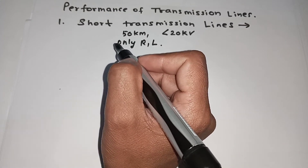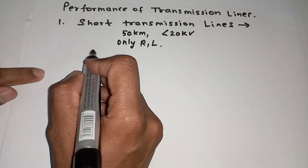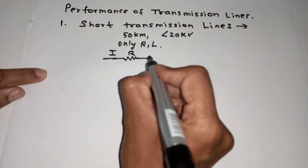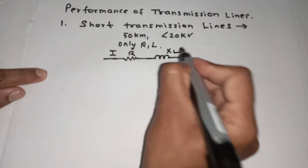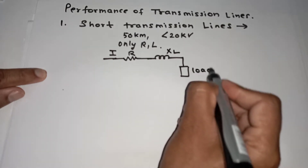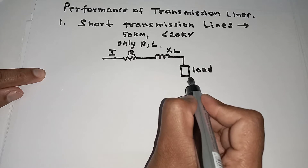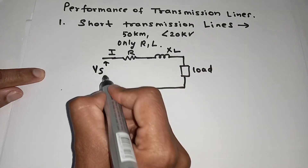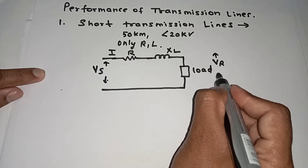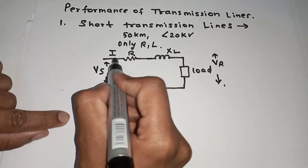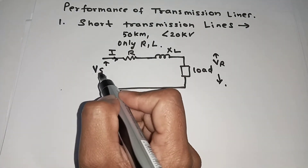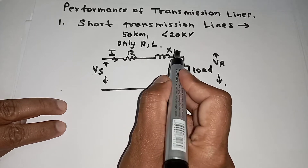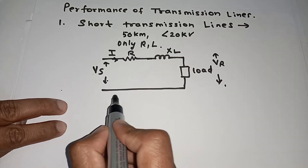Now we'll make a diagram of the short transmission line. We know there is a current flow through some resistance part and some inductive part XL, and a load is there. This is the sending-end voltage and here is the receiving-end voltage. The current flowing through the transmission line is I, with an IR drop across the resistance and an IXL drop across the inductance.